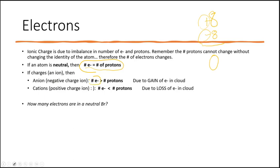If I have more electrons than protons — say 8 protons but 10 electrons — positive 8 minus 10 gives me a negative two charge. I gained electrons, going from 8 to 10 electrons. If you gain electrons, you become negatively charged, which is called an anion.